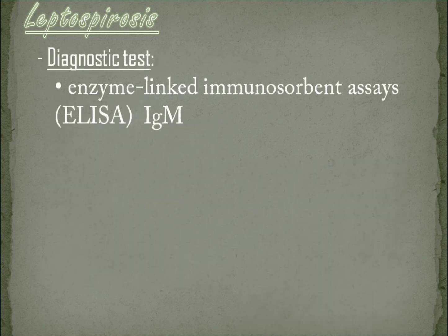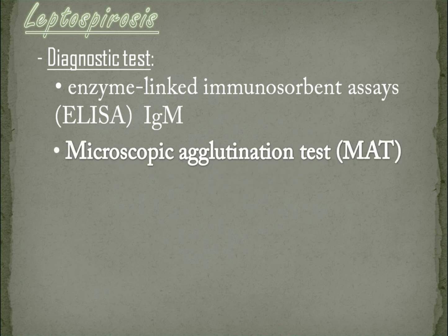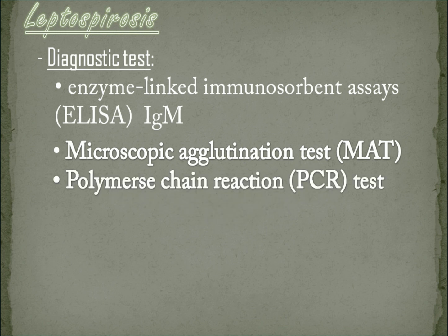Diagnostic tests. ELISA IgM — it functions as a supportive diagnostic test. If the result is positive, it should be confirmed by one of two confirmatory tests. Microscopic agglutination test — a sample collected after the first 7 to 10 days of illness is preferred. Polymerase chain reaction test — whole blood in the first 4 days of illness is ideal, while for a urine sample, it must be collected at least 1 week after the onset of symptoms.